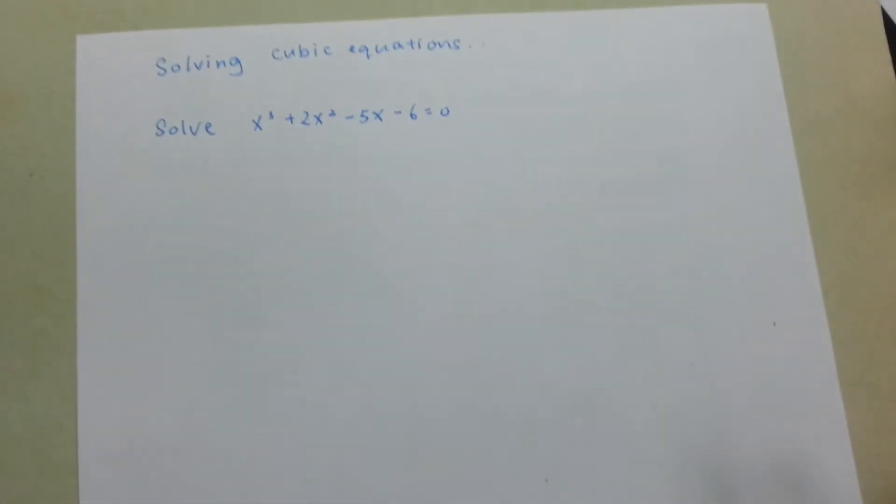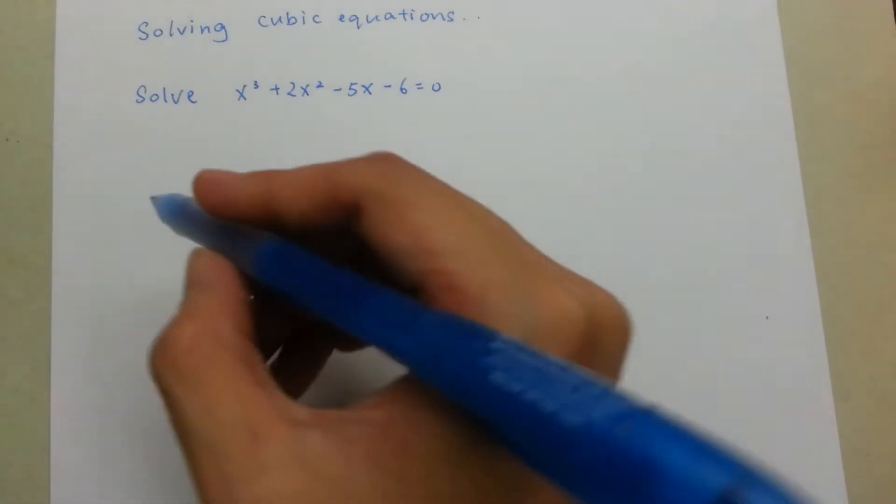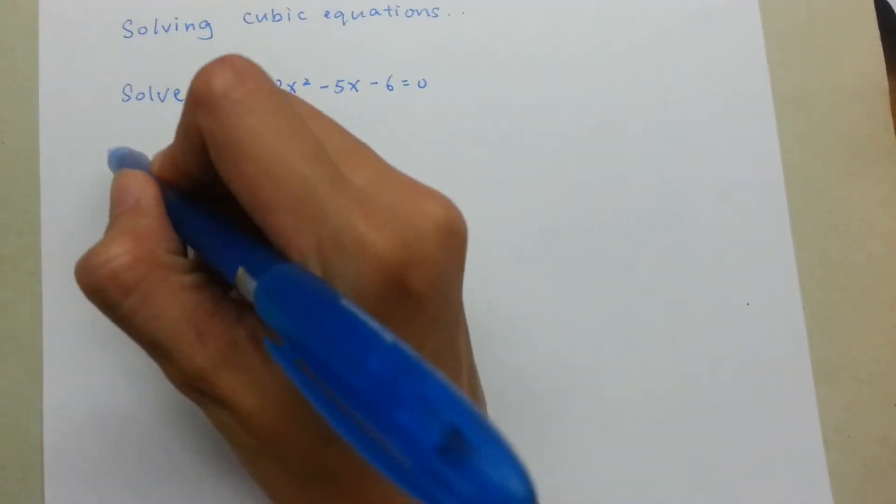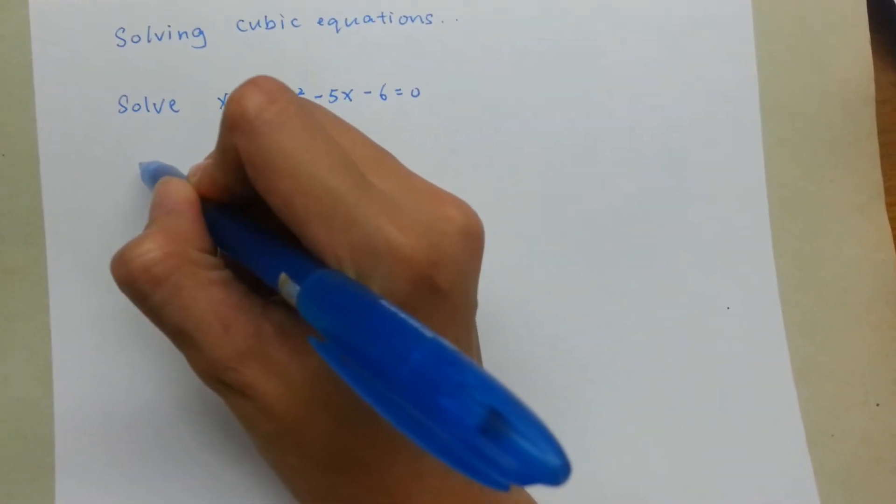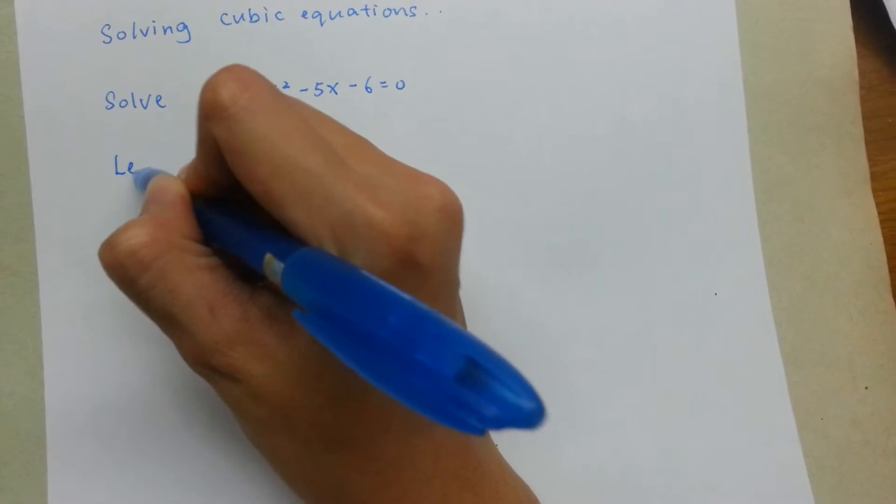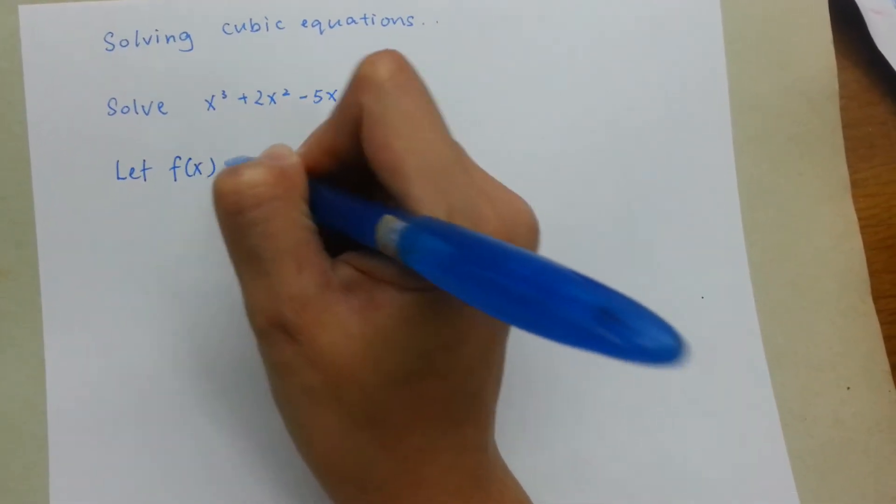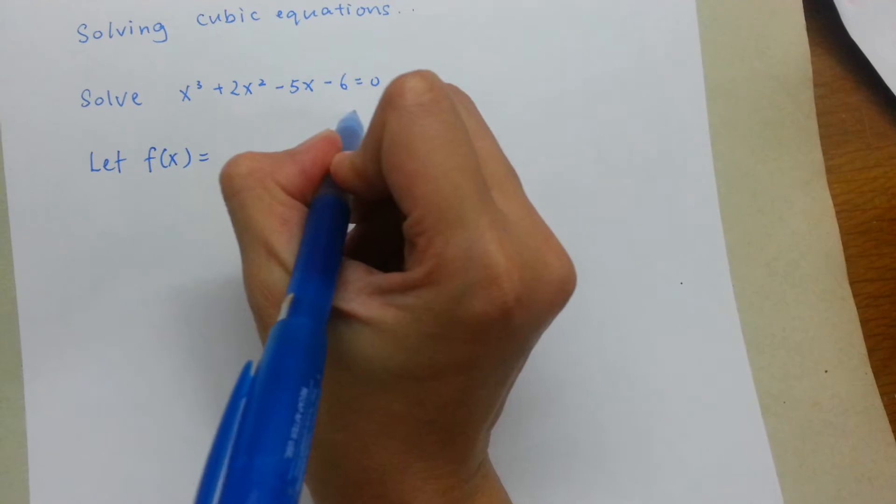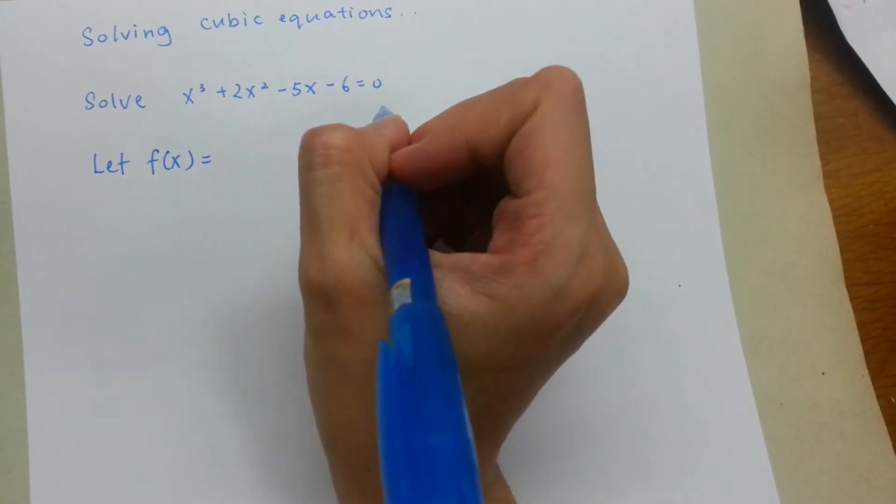I'm going to cover the steps on how to write proper working for this. Now, step 1, you should define your f(x). Let f(x) be this expression on the left without the 0.